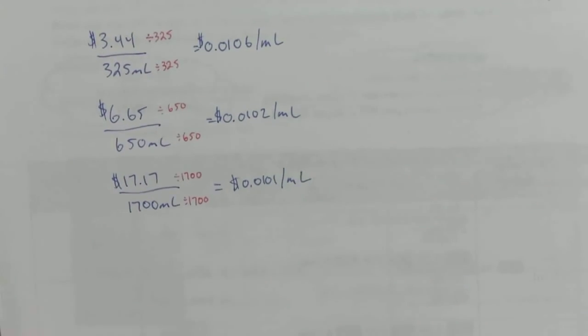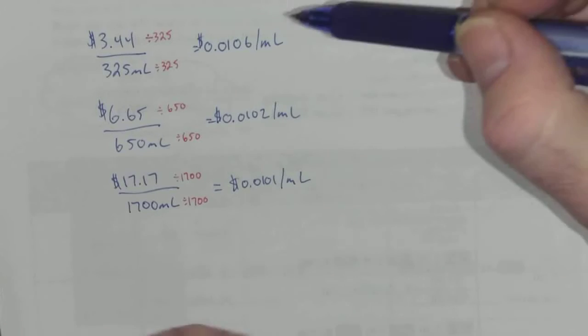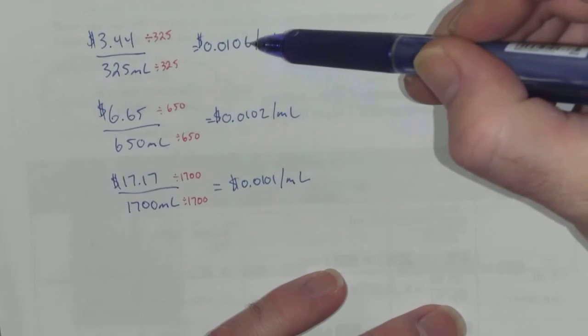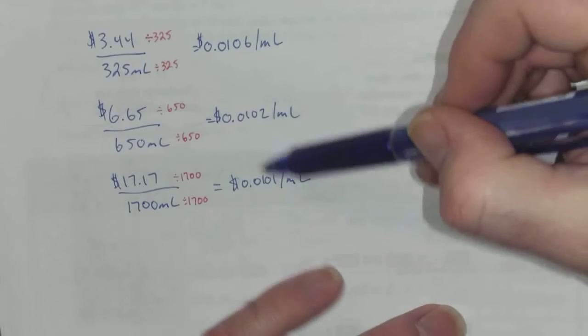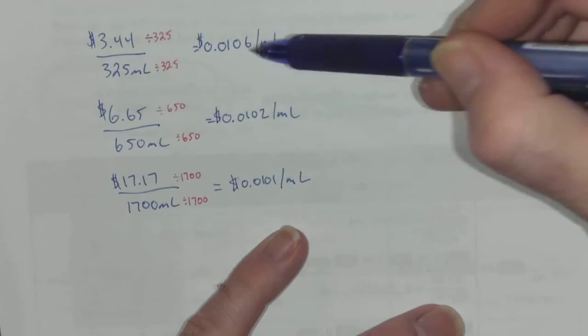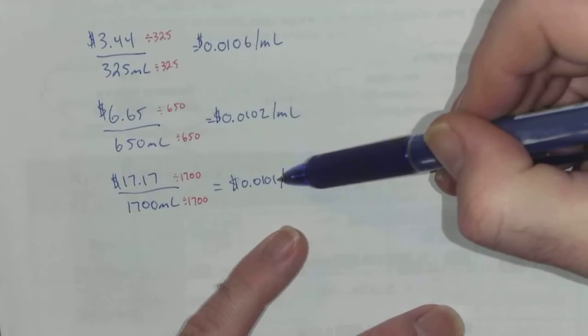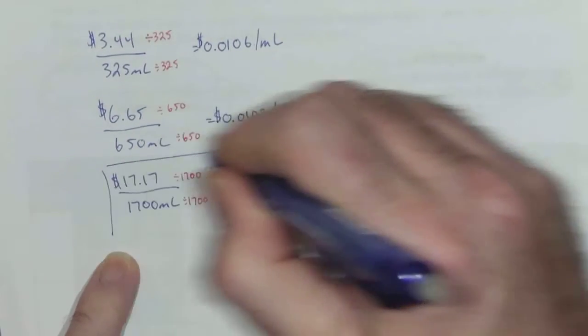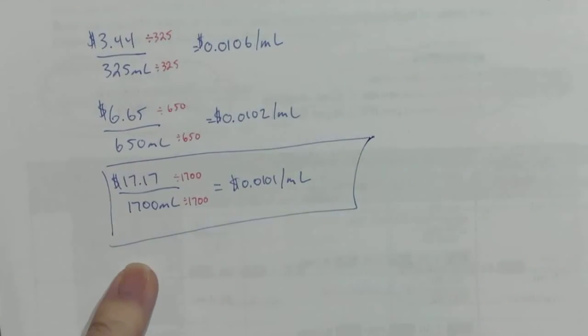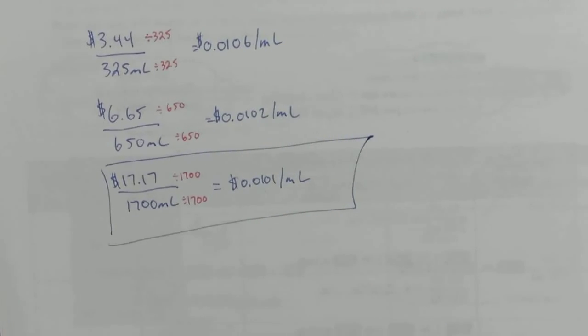Now if you look at the last digit - the first three digits are the same on all - the last digit is a six here, it's a two here, and it's a one here. So your best buy is the bigger container. It's not a huge difference with this particular sizing and price, but it is the better deal.